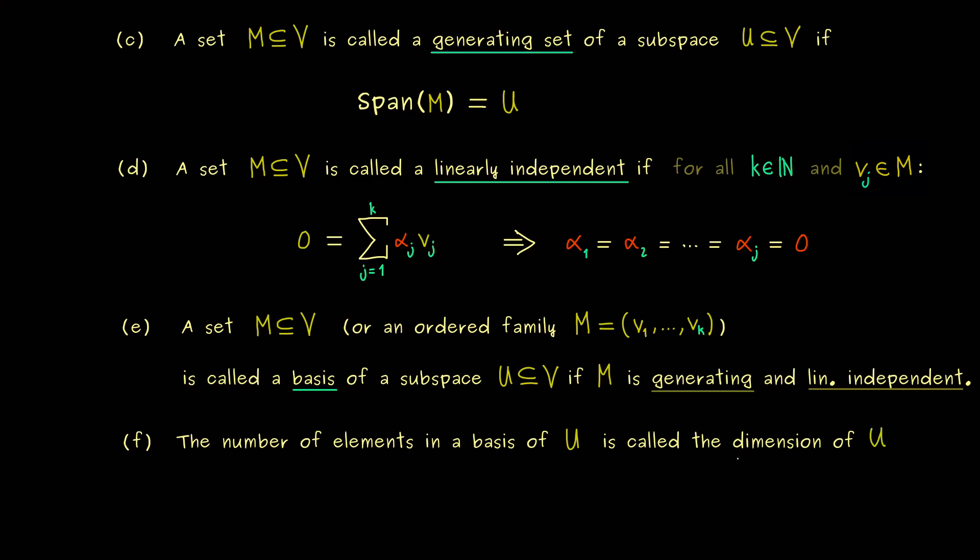So you can say, the dimension is the minimal number of vectors you have to take to span the whole subspace. And the usual notation we use for that is dim of U. And now you already know, possible dimensions could be 0, 1 and so on, so all natural numbers.